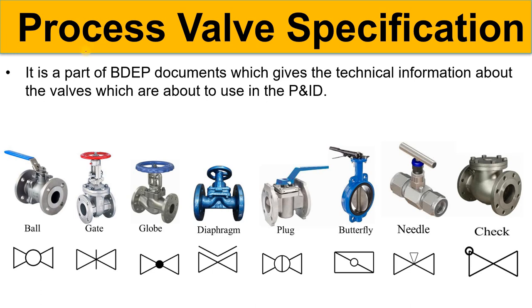Hello, Core Engineering family. In this video we are going to discuss one of the most important documents which is prepared during the BDEP, that is Basic Design Engineering Package. That document is the Process Valve Specification. Whenever we develop the P&ID, we use different types of valves, and each valve will have some technical specification. That technical specification is given in the Process Valve Specification.